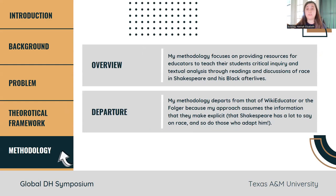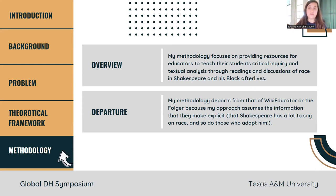My methodology really focuses on providing resources for educators right now for Shakespearean scholars, but hopefully in the future for any scholars who are interested in teaching about race and Shakespeare and how these two ideas converse with each other. By teaching students about critical inquiry and textual analysis through readings and discussions of race in Shakespeare and Black afterlives, my approach departs from Wiki Educator and the Folger because it assumes information they are trying to make explicit. Both start from the position that they need to convince people that Shakespeare has a lot to say on race. My project starts with: Shakespeare does have a lot to say on race — more importantly, what does he have to say, and what do those who adapt him have to say about race themselves?